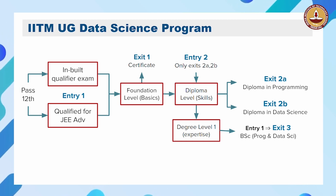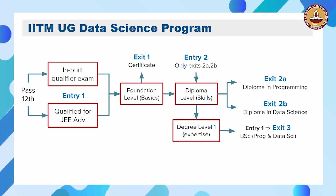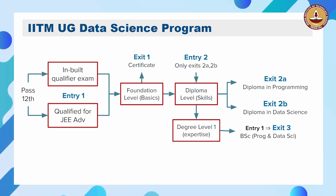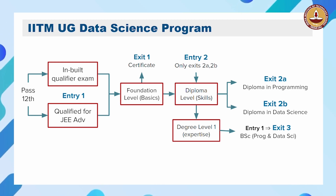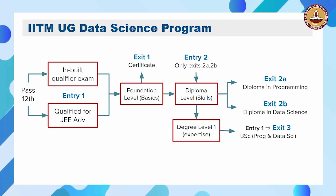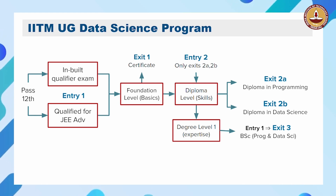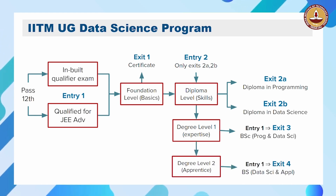At the degree level, there are two different degree levels. The first is degree level 1, which has an exit point of a BSc degree. Degree level 1 has seven courses — seven subjects you have to study additionally. This has electives. After you have picked up the skills, you will learn deeper theory about what those skills are and how to abstract and think about them. All of those courses come in degree level 1, giving you more expertise in this area.